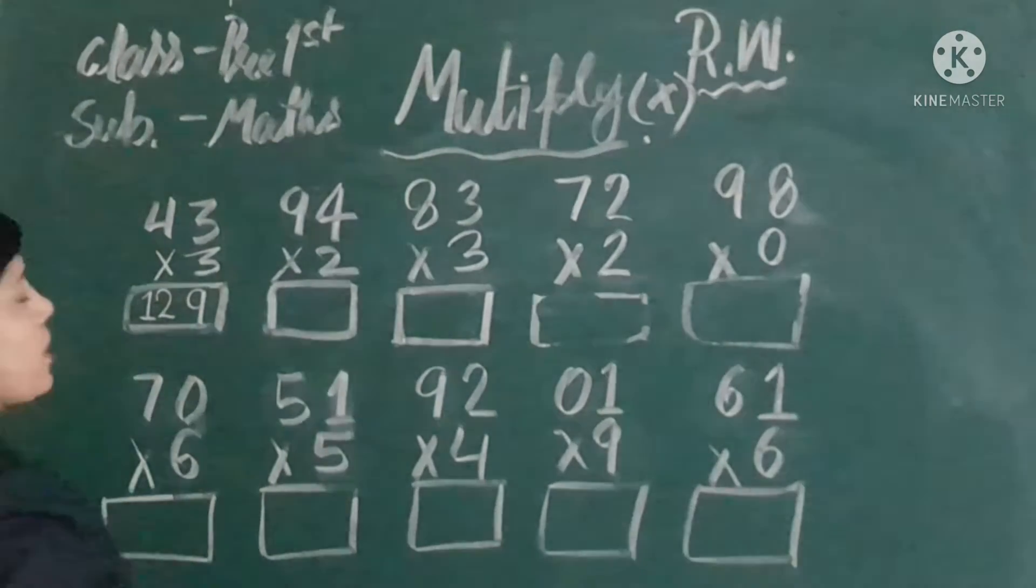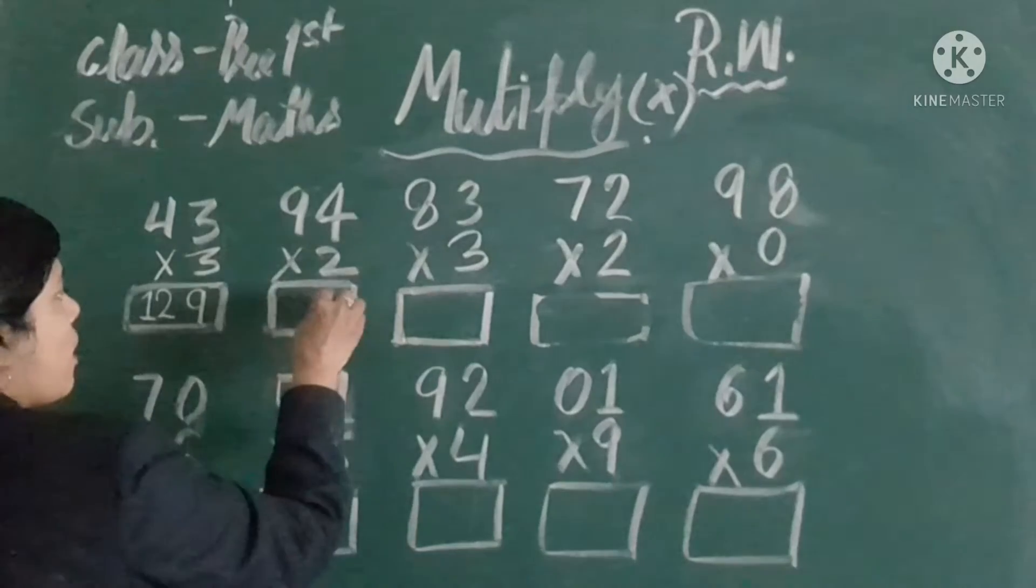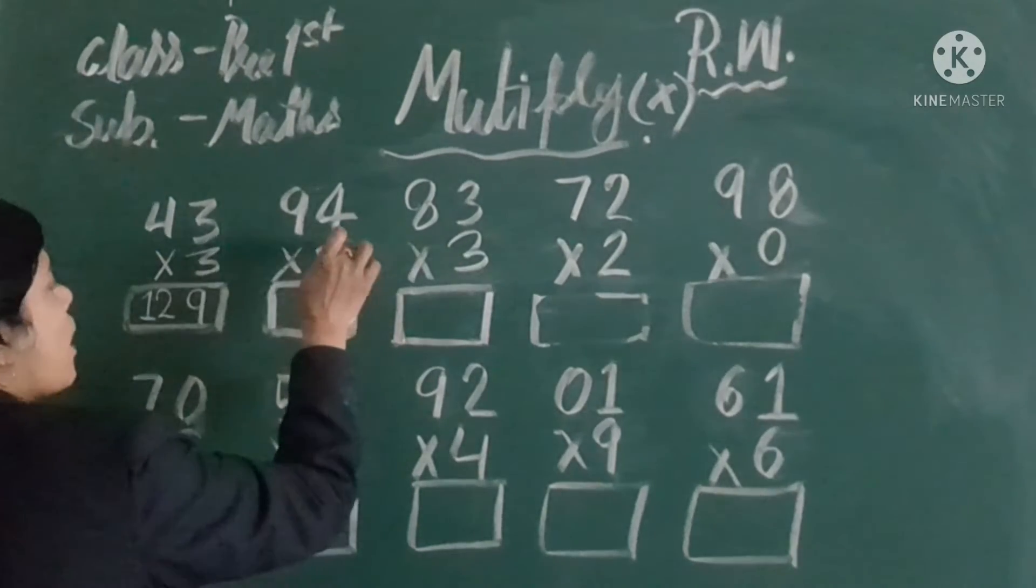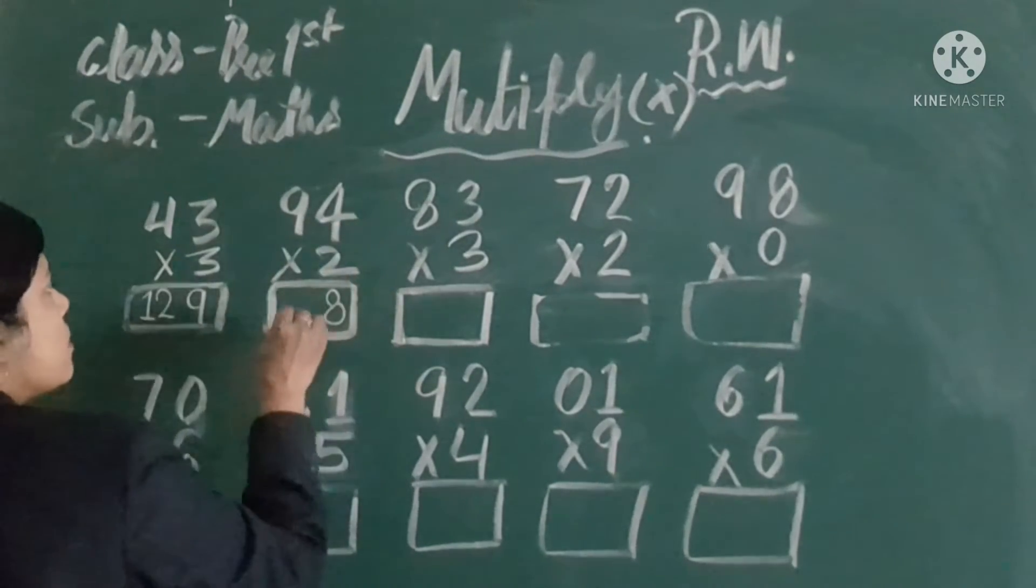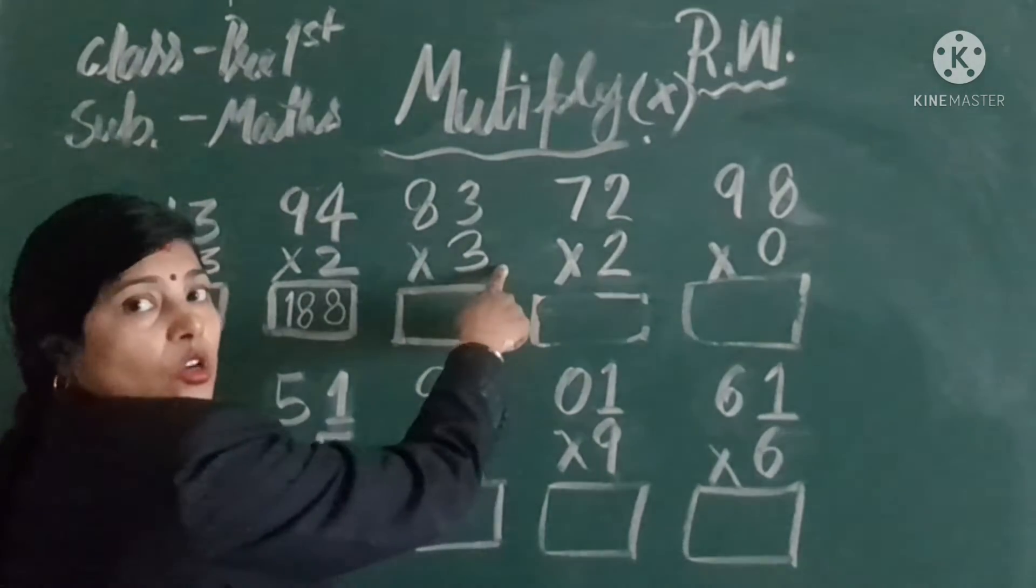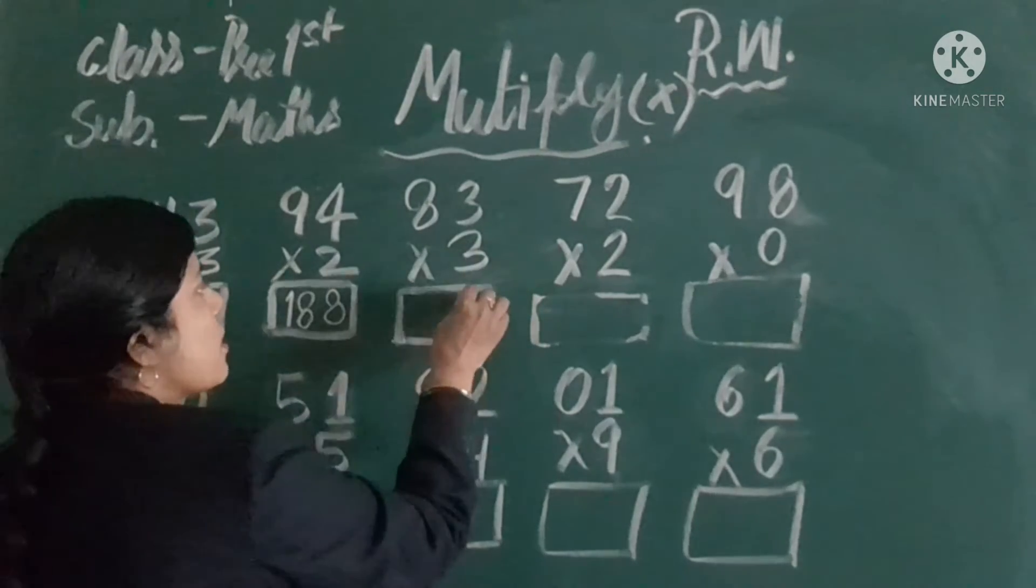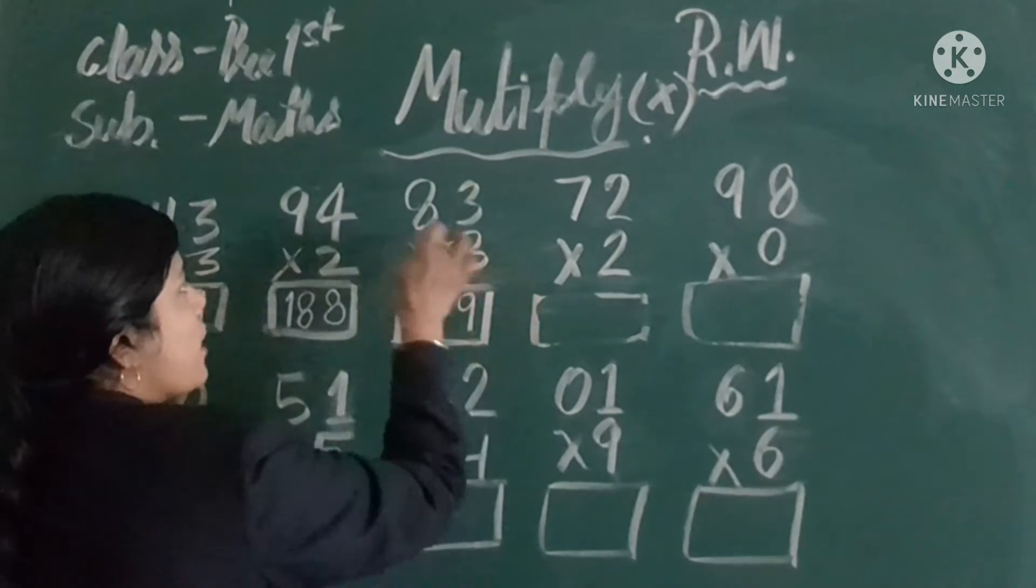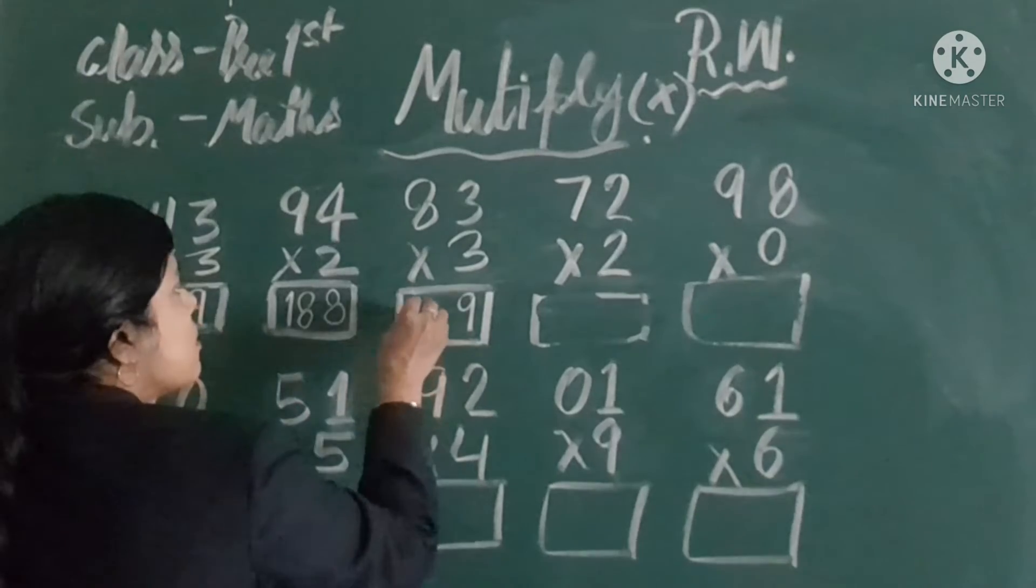Okay? 3, next, 4, 2's are 8 and 9, 2's are 18. Next, look, 3, 3's are 9 and 8, 3's are 24.